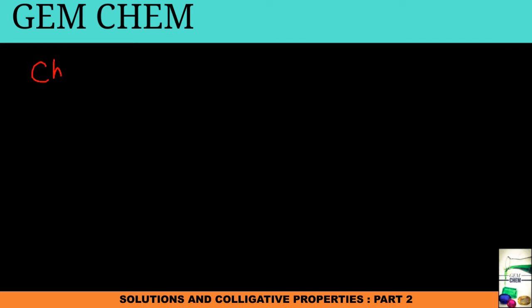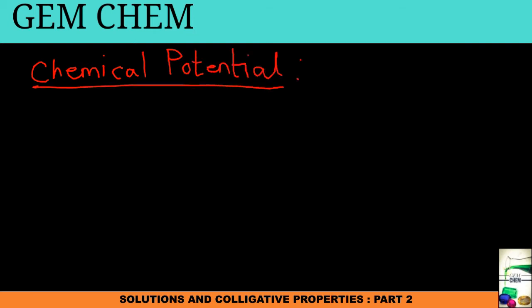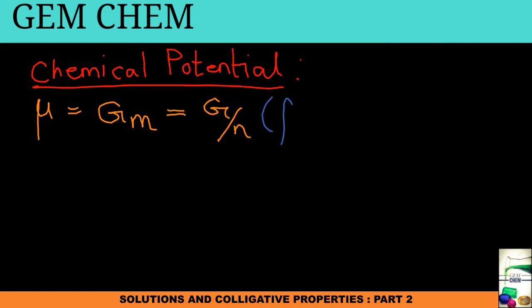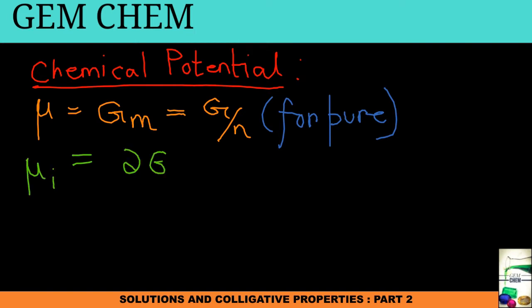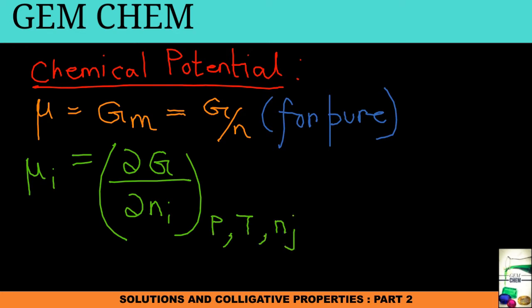What do we mean by chemical potential? Chemical potential is a term prevalent in the chapter of thermodynamics. It is basically partial molar Gibbs free energy and can be used for different purposes in this chapter. It can also be defined in terms of H, U, and A. Its expression is given by mu, where mu equals G_m, that is molar Gibbs free energy partially, and it equals G by n. This expression is common for a pure solution.